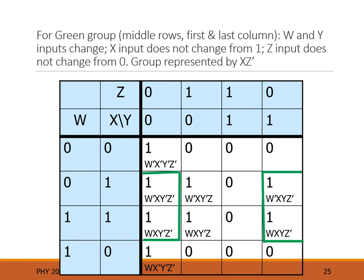The green block is the middle two rows and the first and last column, using the wrapping property. We focus back on the inputs: in the middle two rows, W changes from zero to one — throw it away. X remains one throughout — keep it. Across the first and last column, Y was zero in the first column and one in the last column — it changed, so throw it away. Z was zero in both the first and last column — keep it. W and Y changed; X and Z stayed the same. Our expression for this block is XZ'.